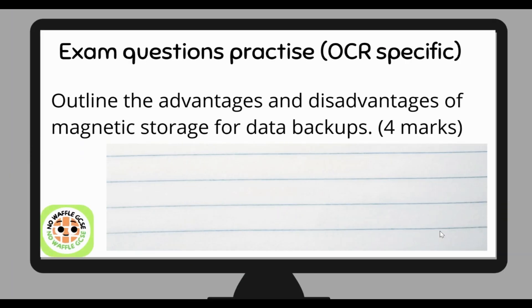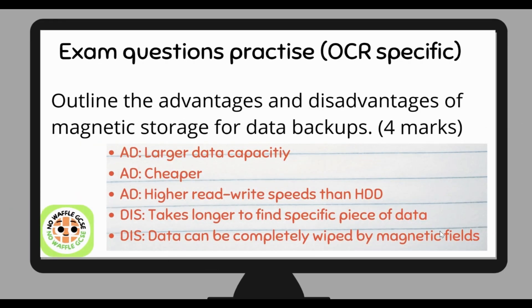Now let's look at some exam questions. Outline the advantages and disadvantages of magnetic storage for data backups — pause to have a go at this four-marker. The answer: advantages include larger data capacity and it's cheaper, and it has a higher read/write speed than hard disk drives. Disadvantages: it takes longer to find a specific piece of data, and data can be completely wiped out by magnetic fields.